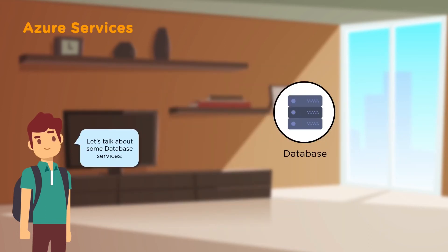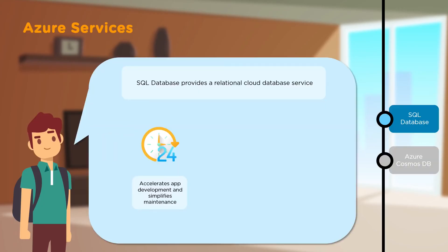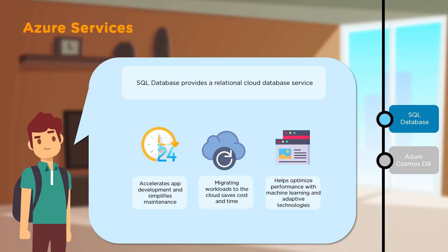Next, let's look at some Database Services. First, we have SQL Database — a relational cloud database service. It helps accelerate app development and makes it easier to maintain your application. SQL Database is also extensively used for migrating workloads to the cloud, saving time and cost. It also helps improve performance by integrating machine learning and adaptive technologies into your database.